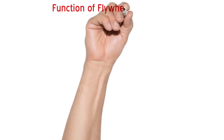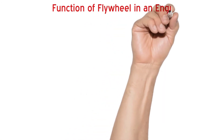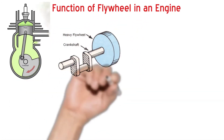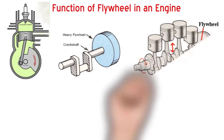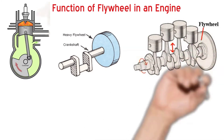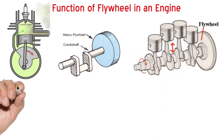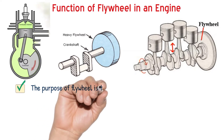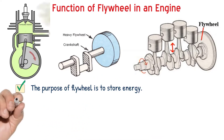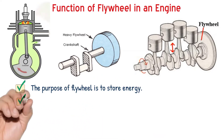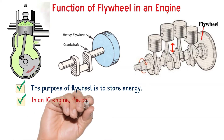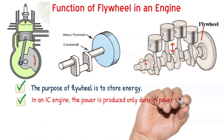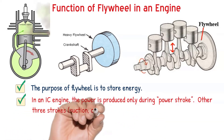Before we answer that question, let us brush up on the function of a flywheel in an engine. We know that the flywheel is used to store mechanical energy. In an IC engine, there are four strokes involved. We get power only during one stroke — that is nothing but the power stroke.